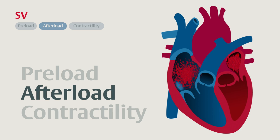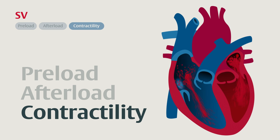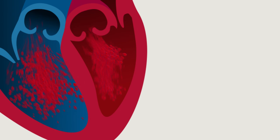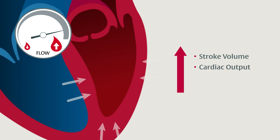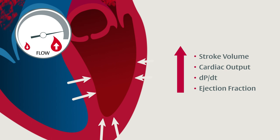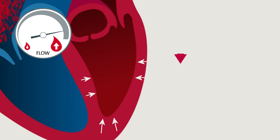Last determinant: contractility — the force the ventricle generates during contraction. Drugs like beta-1 agonists, antagonists, or phosphodiesterase inhibitors are commonly used to increase or decrease contractility. In our diagram, contractility is represented with arrows inside the myocardium. As we increase contractility, the ventricle generates more force, and stroke volume, cardiac output, dP/dT, and ejection fraction increase. If the SVR is not affected, an increase in contractility could result in an increase in blood pressure.